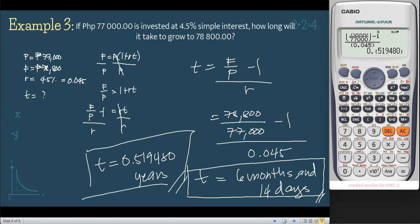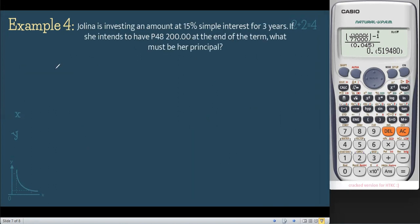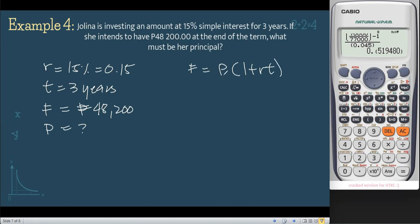For our last example, Jolina is investing an amount at 15% simple interest for 3 years. If she intends to have 48,200 at the end of the term, what must be her principal? The givens are: rate is 15% or 0.15 in decimal, time is 3 years, and the future value is 48,200. We're finding the present value or principal. Using our formula, F equals P times 1 plus RT. Since we're finding principal, divide both sides by 1 plus RT. Cancel, and P equals F over 1 plus RT.